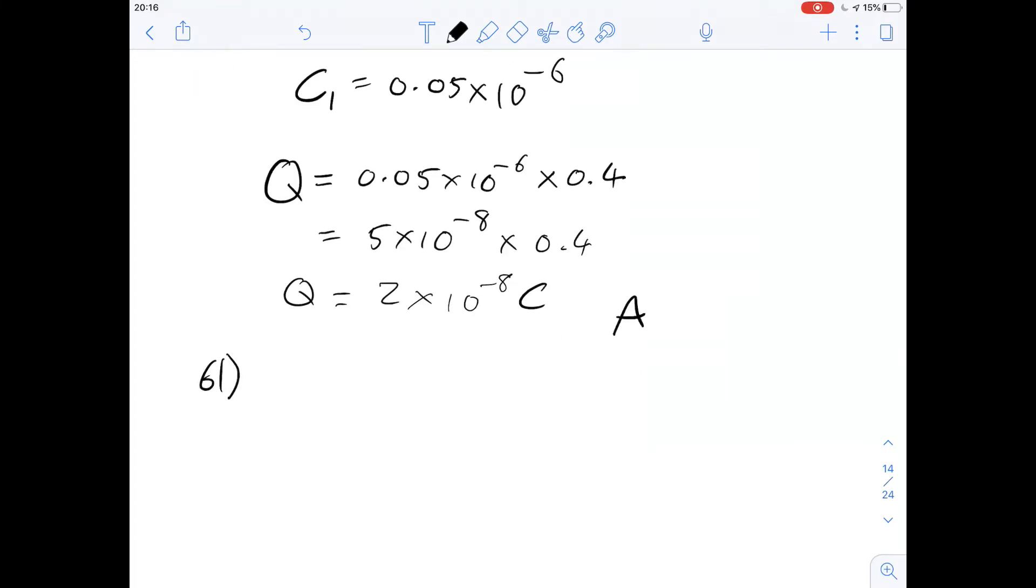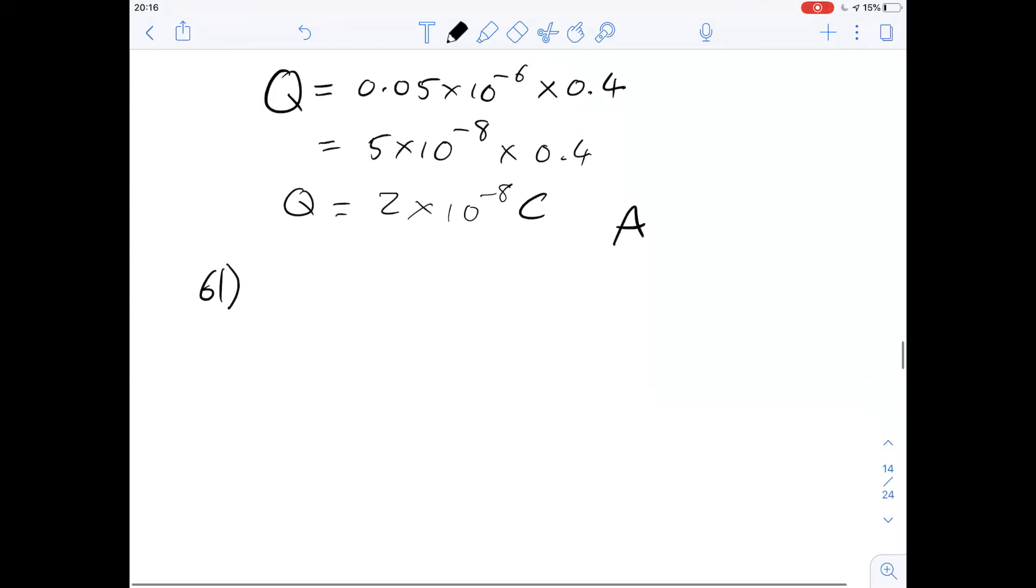If we look at 61, it says the percentage of charge that was transferred from C1 to C2 after the two parts was closest to what. So really we need to think about the ratio of the capacitance here. We've got C1 to C2. We'll just make this ratio. We know C1 has a capacitance of 0.05 and C2 has a capacitance of 0.1.